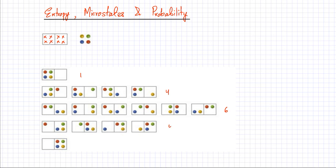With three on one side and one on the other, there are four possible arrangements. And then I can have all four particles on the right-hand side, which gives only one possible arrangement — one possible microstate. So these are the total number of microstates that the particles could exist in.